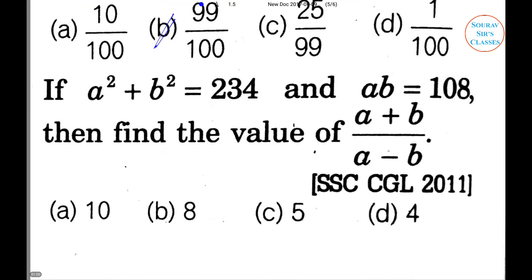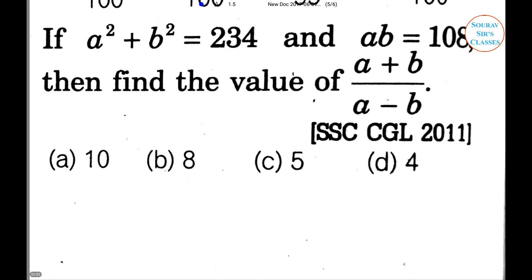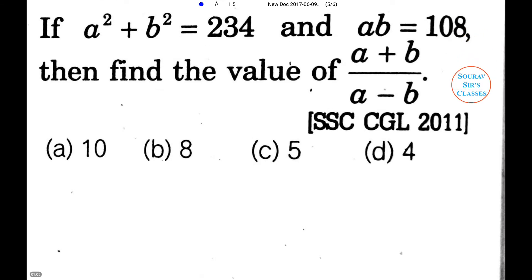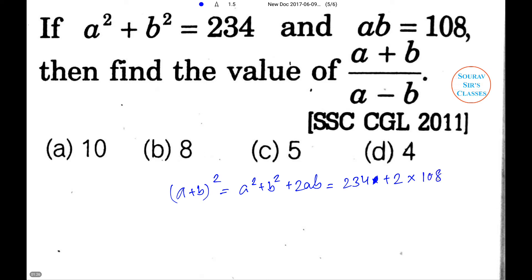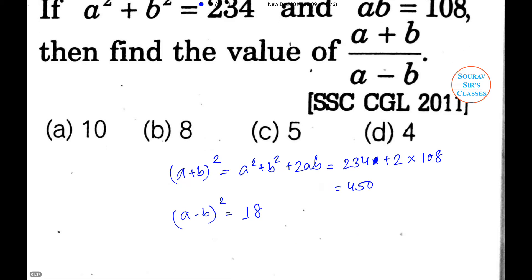Next problem: if A² + B² = 234 and AB = 108, find the value of A+B and A−B. Now, (A+B)² = A² + B² + 2AB = 234 + 2×108 = 450. And (A−B)² = A² + B² − 2AB = 18.